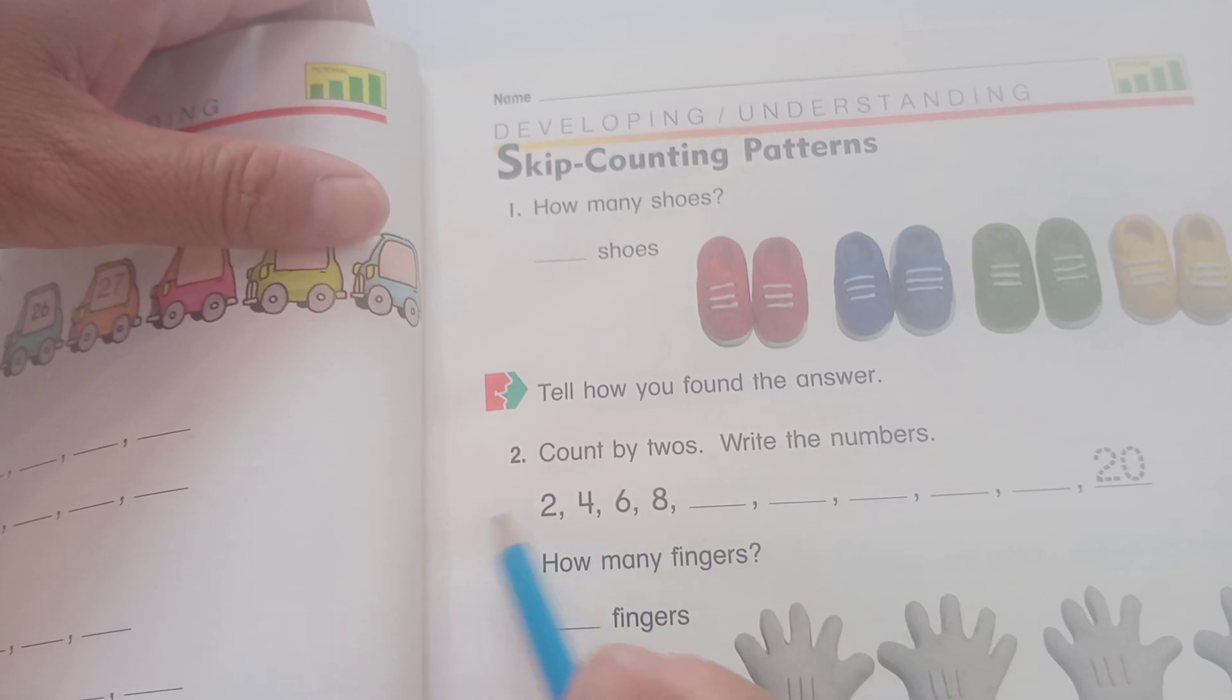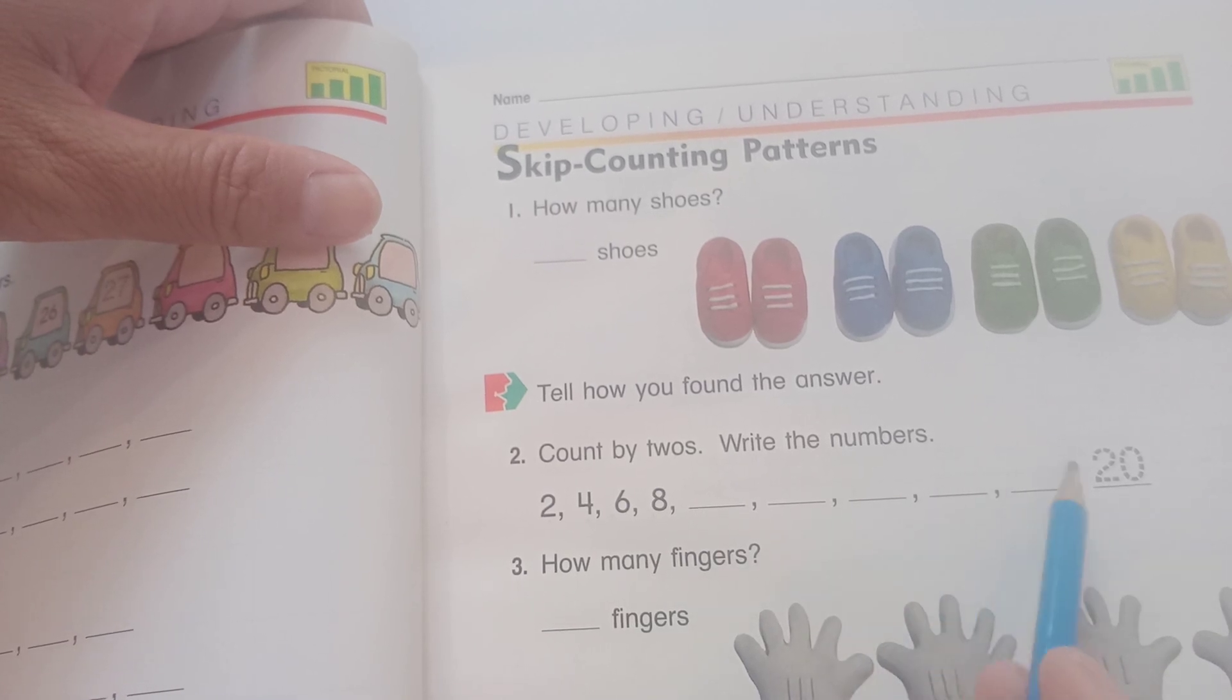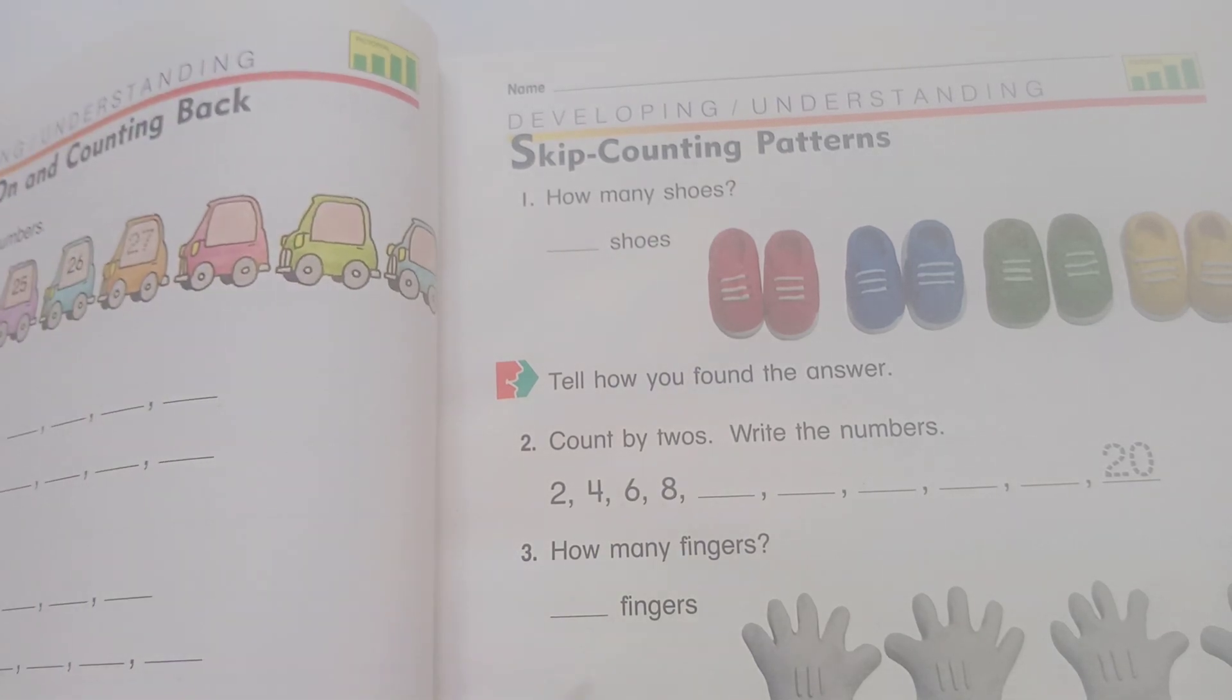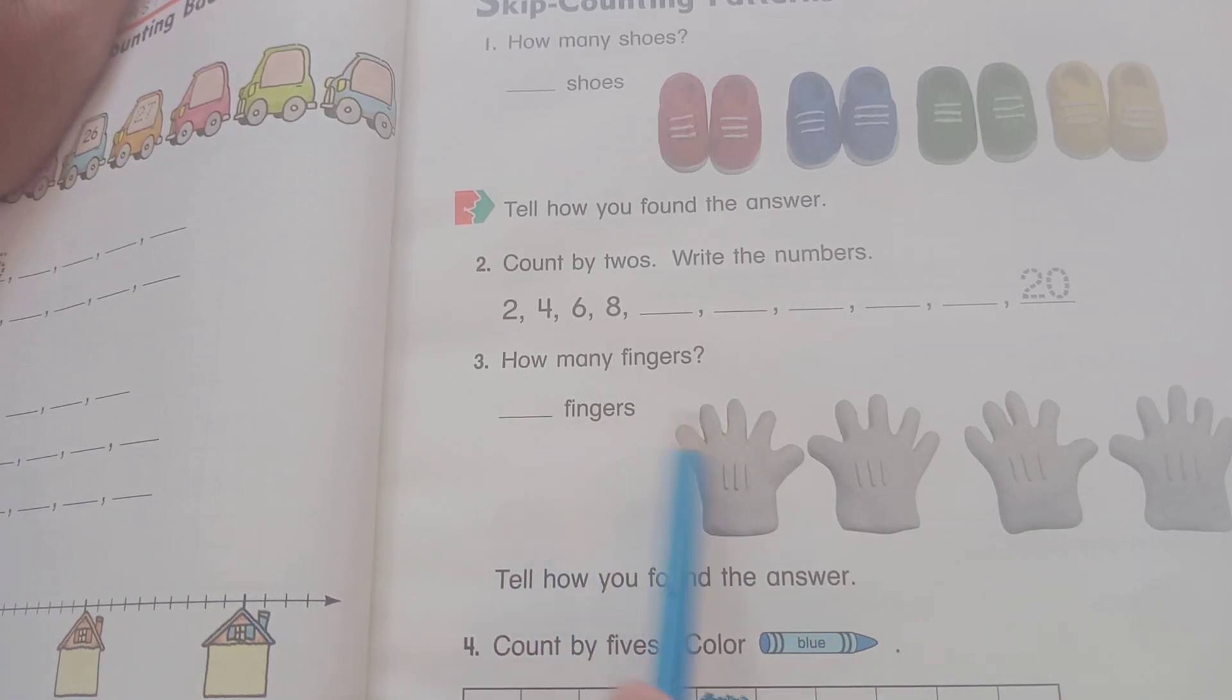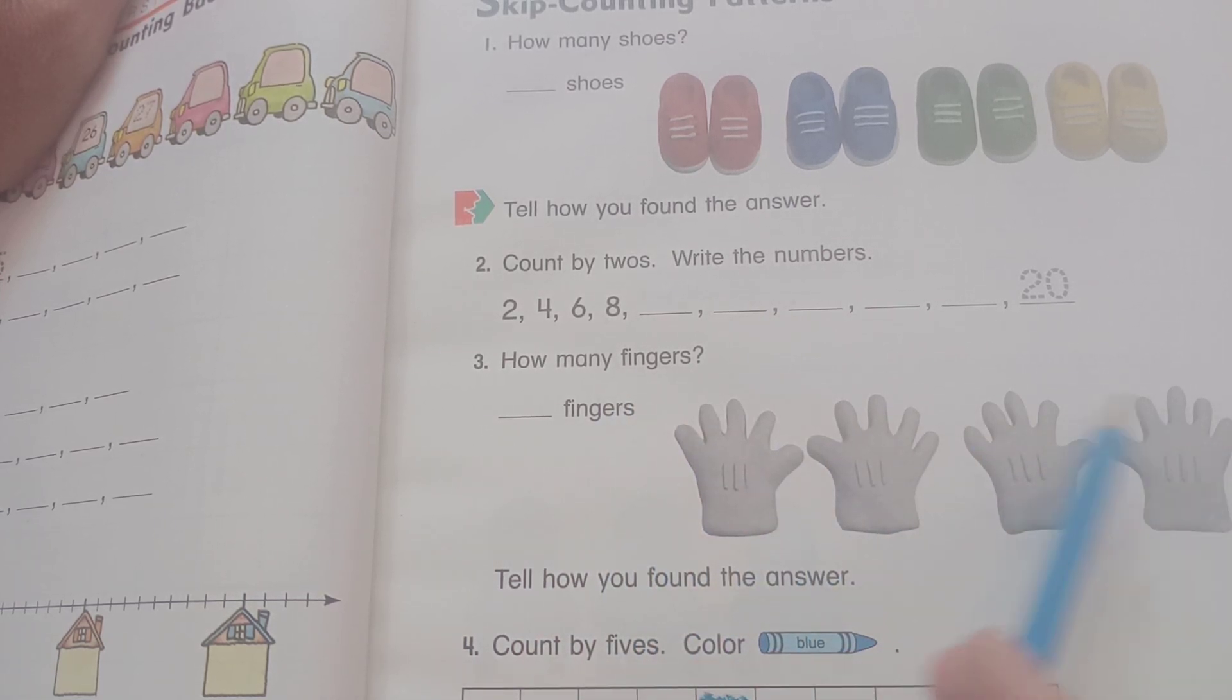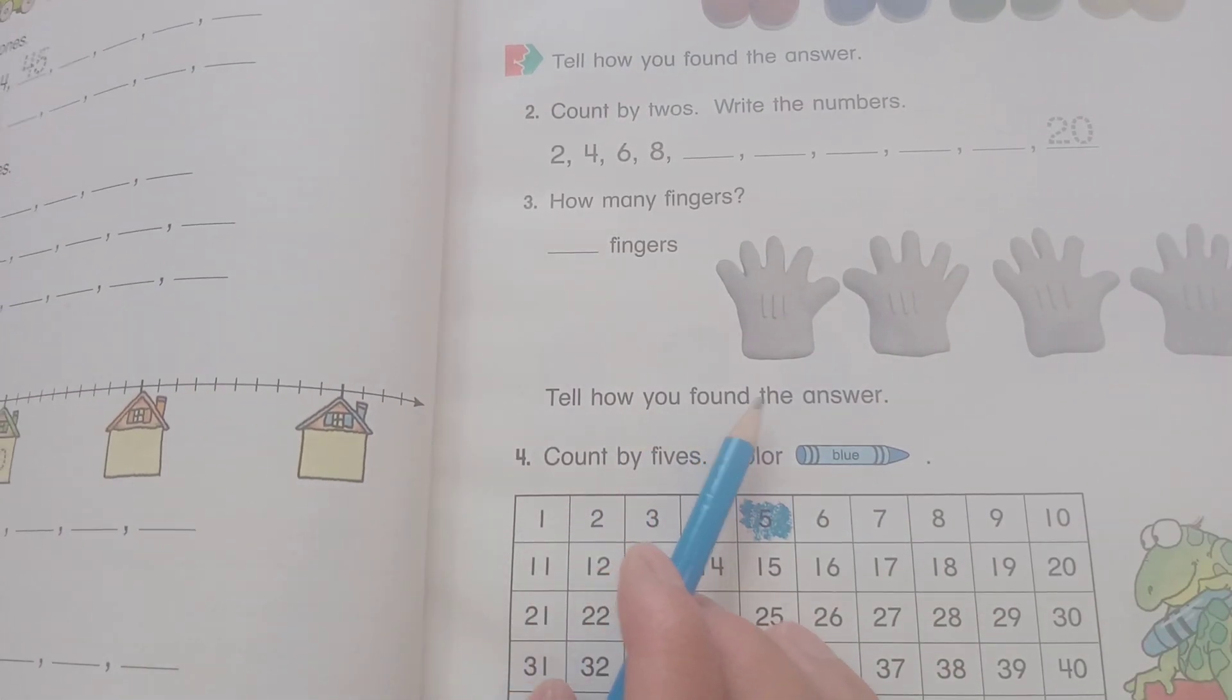Tell how you found the answer. Count by twos, right? Two, four, six, eight, ten, twelve, fourteen, sixteen, eighteen, twenty. And then count by twos. I was doing, you can see number three. How many fingers? Then finger. One, two, three, four, five - one, two, three, four, five. Then five, ten, fifteen, twenty fingers. Twenty fingers.